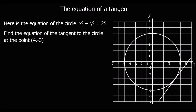Now we're going to look at finding the equation of a tangent to a circle. We've been given a circle with the equation x squared plus y squared equals 25. We need to know that the center of this circle is at (0, 0) and it's got a radius of square root of 25, so 5. So x squared plus y squared equals 25 has center (0, 0) and radius 5.